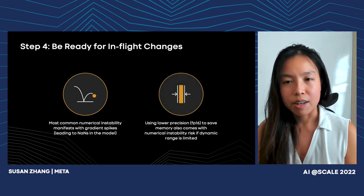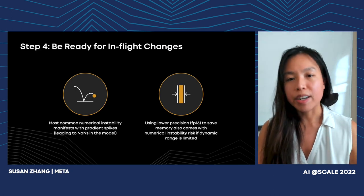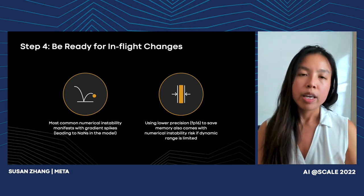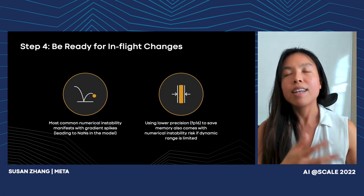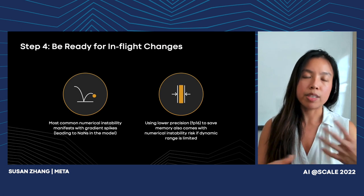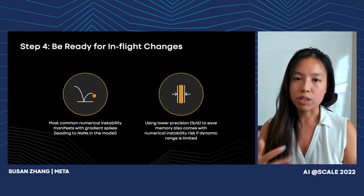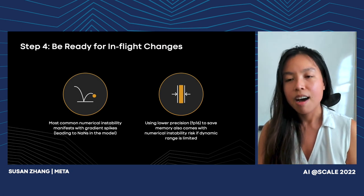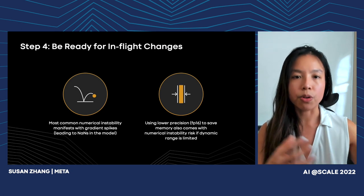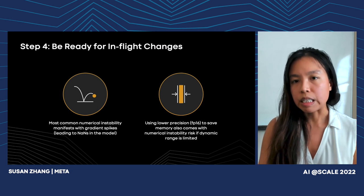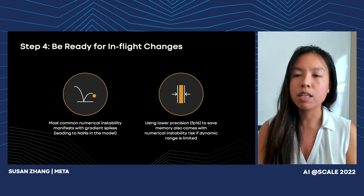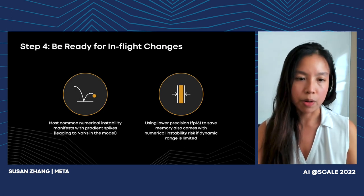Assuming your machines are working as expected, the next issue is in-flight changes you have to make to control for numerical instability. Even if the hyperparameters selected in the beginning were working fine, they may not continue working as you keep training at scale. One of the most common numerical instability issues comes from gradient spikes, which lead to NANs in your model and training completely stops. This gets compounded by using lower precision — FP16's limited dynamic range means overflows and underflows happen more frequently.